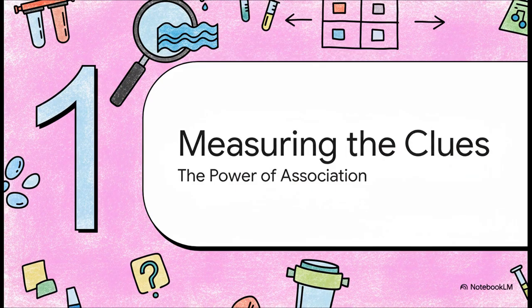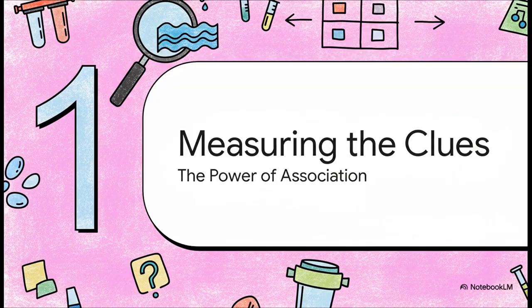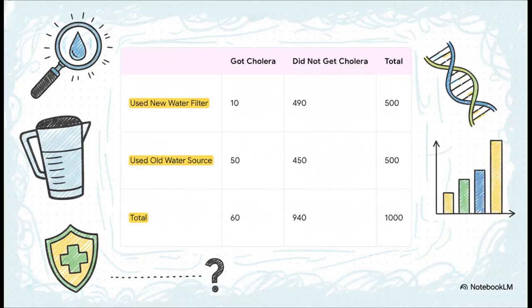All right, so every good detective starts by looking for clues. In our world, a clue is what we call an association. It's just a fancy word for a link. We're trying to see if there's a connection between an exposure, that's the thing we're interested in, like using the new water filter, and an outcome, which is the result, in this case, getting cholera or not. And boom, here's where the clues really start to pop. This little grid is called a 2x2 table, and it's a public health detective's best friend.